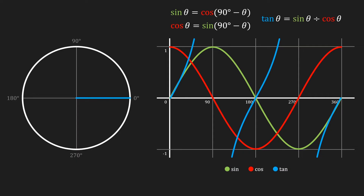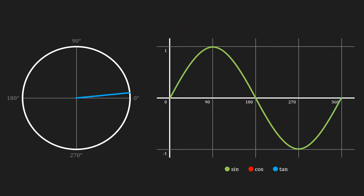Let's now have an in-depth look at one of these functions — I'm going to take the sine function. Given an angle of 45 degrees, we can use this graph to calculate the sine of that angle. To do that we look up the angle on the x-axis of our graph, trace a line up to the sine function and then a line to the y-axis, and that gives us a value of 0.71 for the sine of theta.